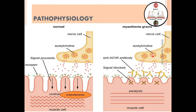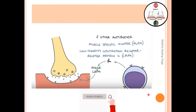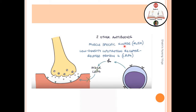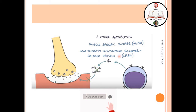In myasthenia gravis, the nerve cell releases acetylcholine, but before it can bind onto the receptor site, an antibody is already sitting on the receptor site, blocking the signal and causing paralysis or varying degrees of muscle weakness. These antibodies are either anti-cholinergic receptor antibodies, muscle-specific tyrosine kinase (MuSK), or low-density lipoprotein receptor-related protein 4 (LRP4).